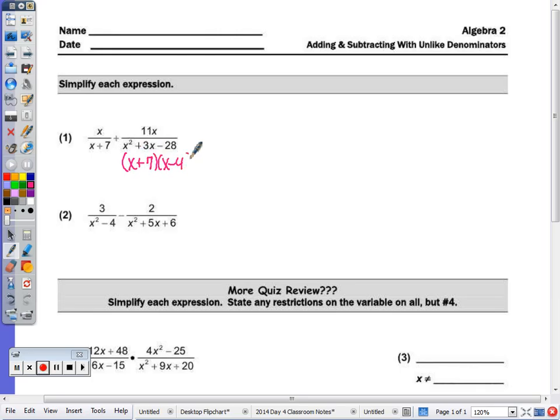You can see they have the x plus 7 in common, so I want to multiply this fraction on the right by x minus 4.